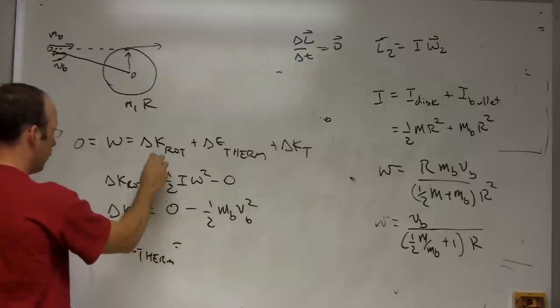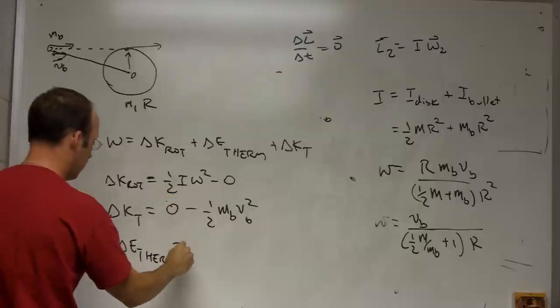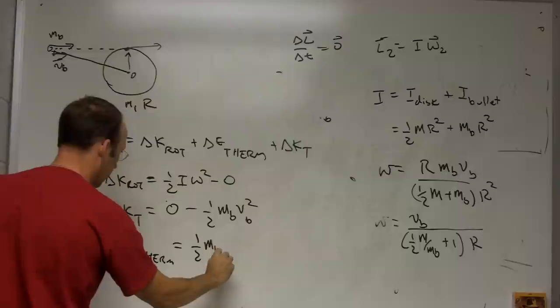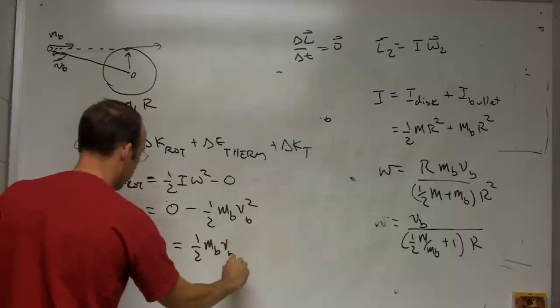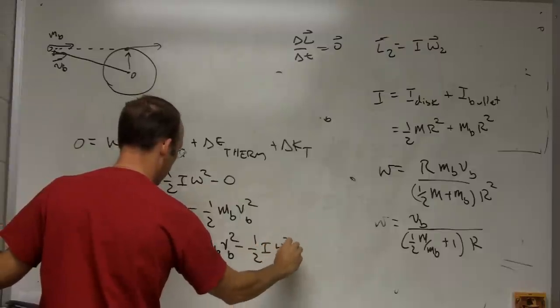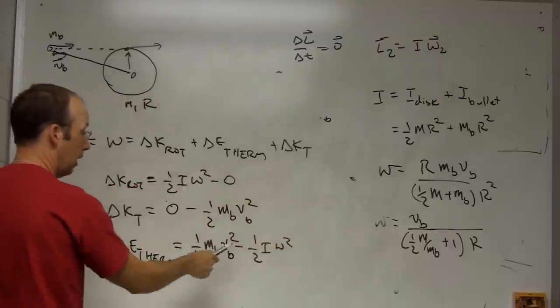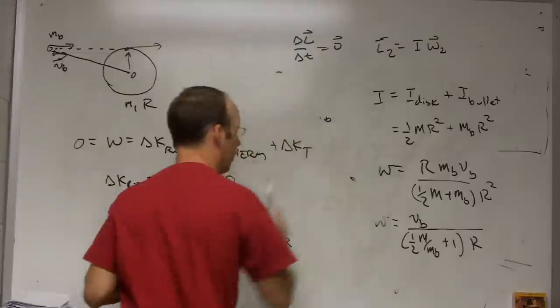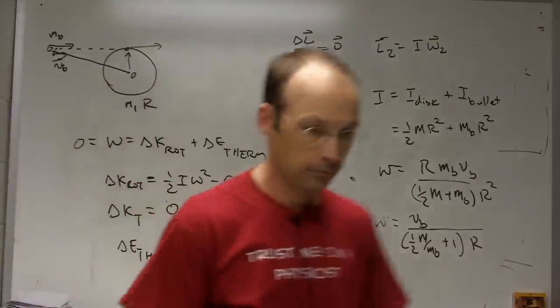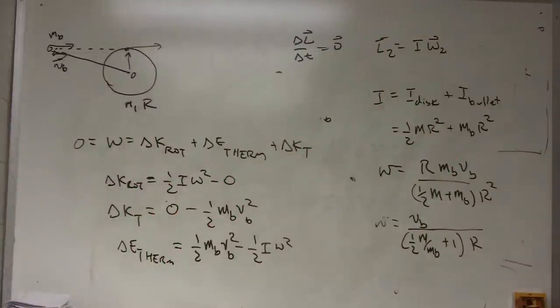It would be negative the rotational kinetic change in rotational kinetic energy. So it would be this: one half mass of the bullet, velocity of the bullet squared minus one half I omega squared. Omega is right there and I is that I right there. Cool? Okay. There we go.